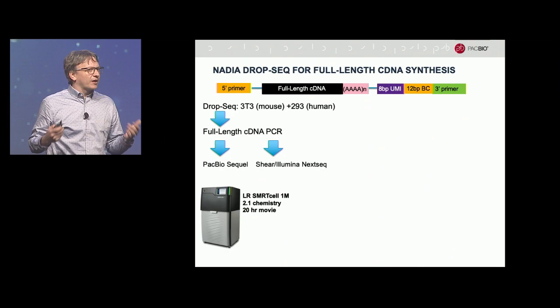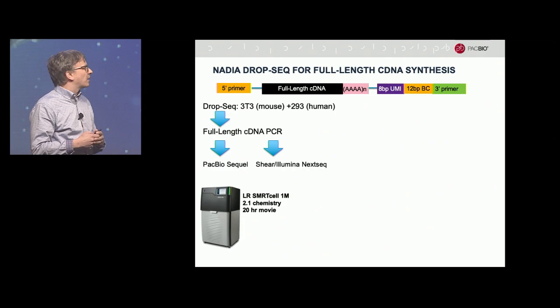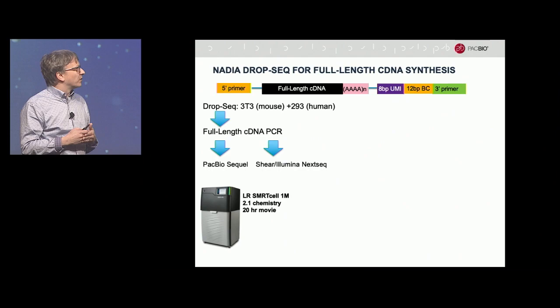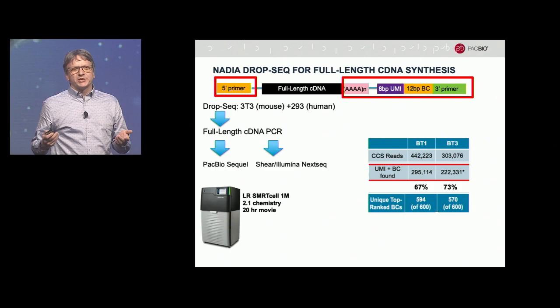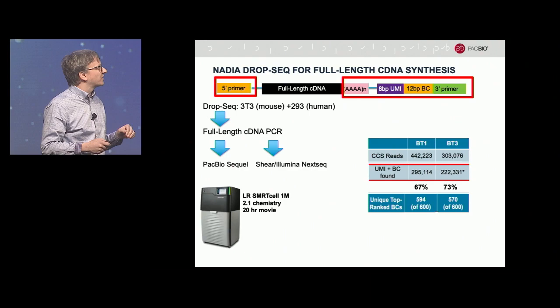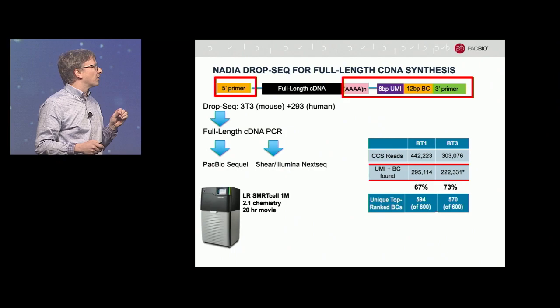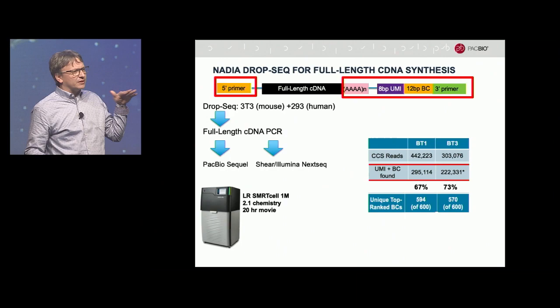I'm going to show you some of the QC we've done along the way and then some data of what this looks like. We did the standard experiment from the first McCosco paper: take two cell lines, mix them together, perform DropSeq, synthesize full-length cDNA, and then sequence either on the PacBio SMRT sequencer or shear it and sequence on the Illumina platform. With our current long read lengths, we go around the molecule many times and develop really high consensus accuracy, allowing us to accurately call barcodes out of these reads. About 70% of CCS reads contain all of the information needed to do isoform analysis.